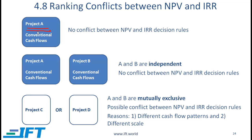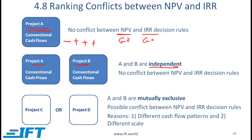If you have a particular project with conventional cash flows — and conventional cash flow means that there is only one change in sign — then there will be no conflict between NPV and IRR. In other words, if the NPV rule says to go for the project, the IRR rule will always say the same thing. If you have two projects which are independent and they have conventional cash flows, then again there will be no conflict between the NPV and IRR decision rules.